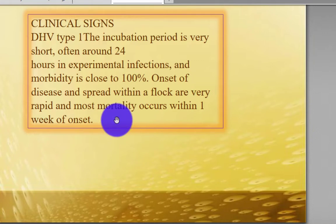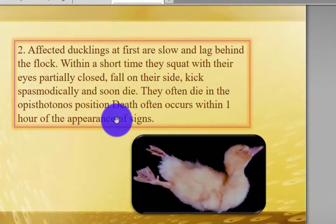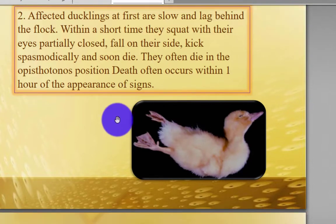Most mortality occurs within one week of onset. The affected ducklings at first are slow and lag behind the flock. Within a short time they squat with their eyes partially closed, fall on their side, kick spasmodically, and soon die, often in an opisthotonus position. This often occurs within one hour of the appearance of signs.